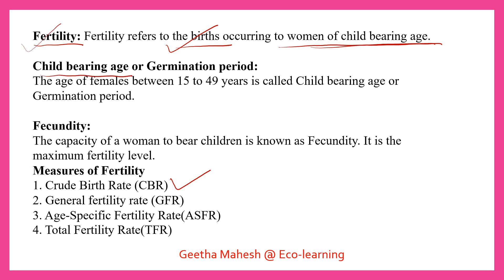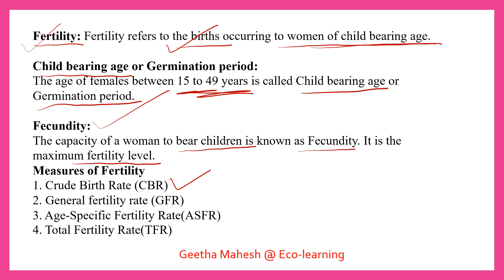Child-bearing age is usually 15 to 49 years of the female age group — that is the child-bearing age and germination period. Fecundity is the capacity of women to bear children, meaning the maximum fertility level. The measures of fertility we need to calculate include: crude birth rate, general fertility rate, age-specific fertility rate, and total fertility rate.